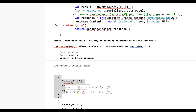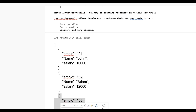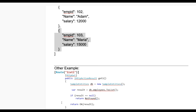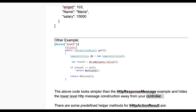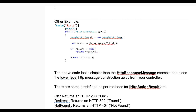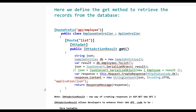The JSON result will look like a collection of employees: employee 101 John 10000, employee two, and employee three. Using IHttpActionResult directly, for example, return NotFound() if result equals null, and return Ok(result), makes the code simpler than using HttpResponseMessage. It hides the lower-level message construction away from the controller. Some predefined helper methods of IHttpActionResult are: Ok, Redirect, NotFound, Unauthorized, Conflict, and BadRequest.